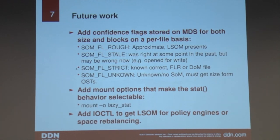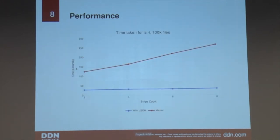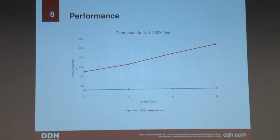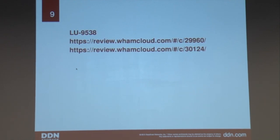Here are some performance numbers we've got. We made a very initial-stage patch on the client to implement the new mount option idea from the previous slide. Here's the time taken for ls -l under a directory with a hundred solid files. The time for ls -l grows with the number of stripes. If you're using the new mount option asking for lazy SOM, it's pretty constant as expected because you're only talking to the MDT, not the OSTs.